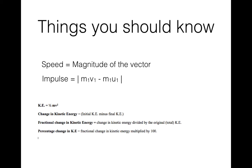The percentage change in kinetic energy is the fractional change in kinetic energy multiplied by 100. You're basically just converting a fraction to a percentage by multiplying by 100.